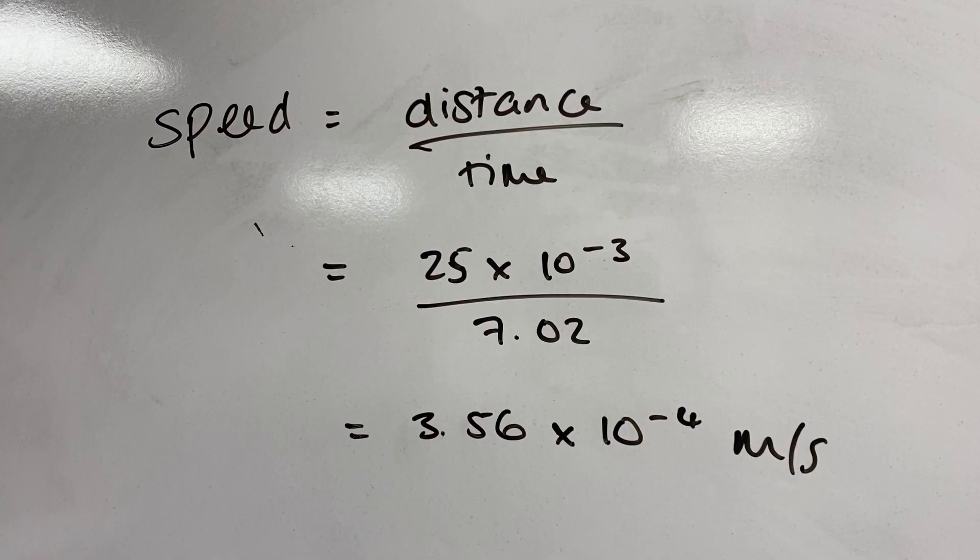Here are our values plugged into speed equals distance over time and this gives us a wave speed of 3.56 times 10 to the minus 4 meters per second. So that is how to directly measure wave speed, frequency and wavelength in the mini ripple tank. In my next video I'm going to show you a way that you can calculate frequency simply by using your measured wavelength and the depth of the water.